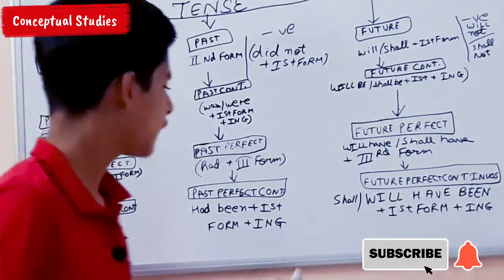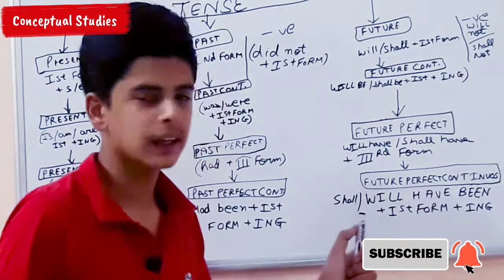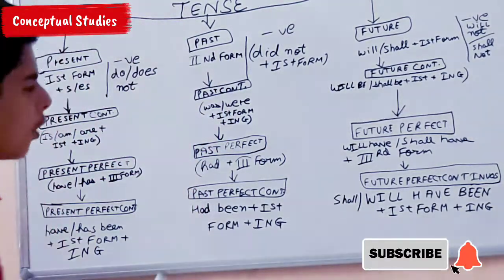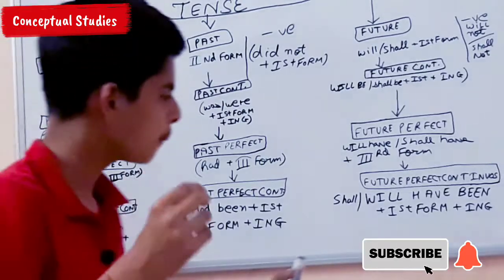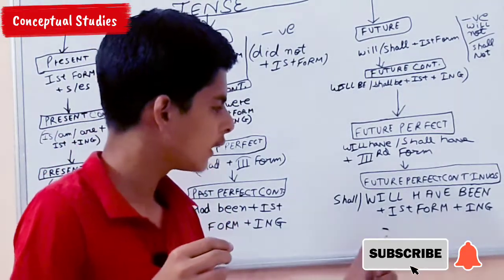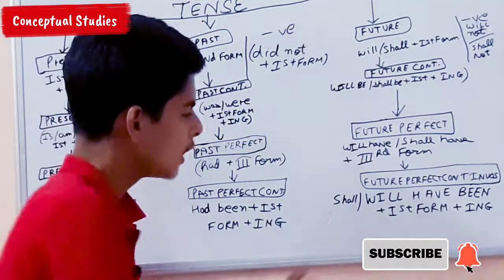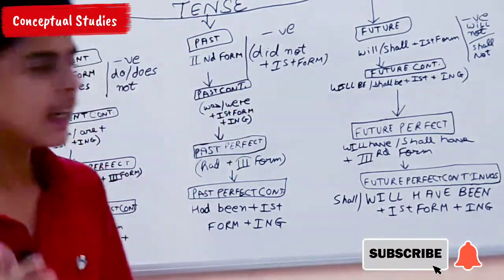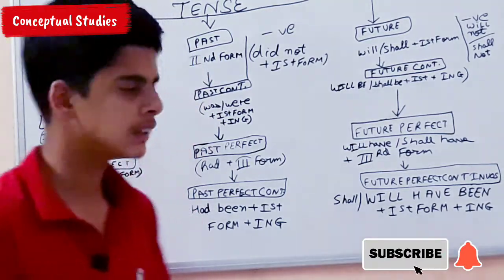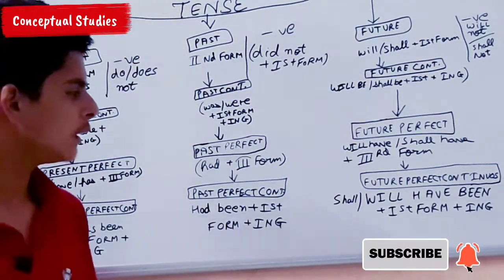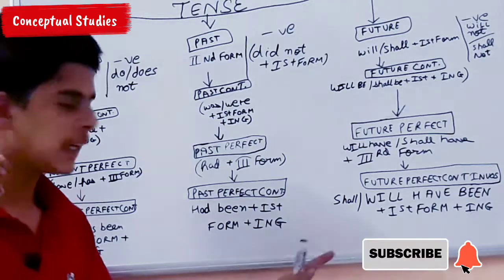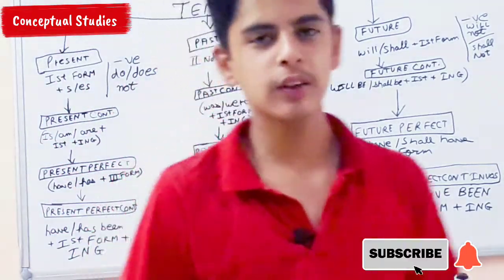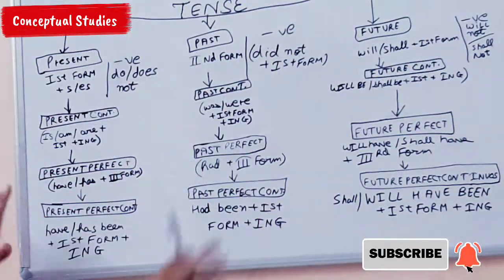For Future Perfect Continuous, 'will have been' or 'shall have been' plus first form plus '-ing' is used — for example, 'He will have been playing in the garden.' So 'will' and 'shall' differ in usage. This covers the entire tense chart.